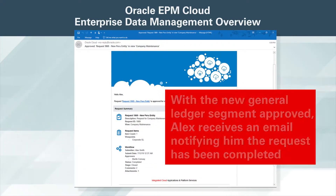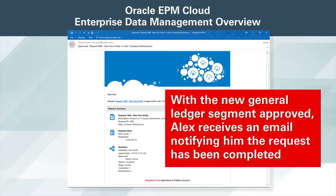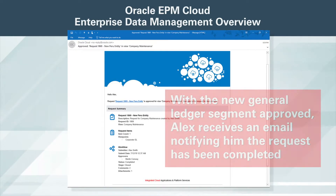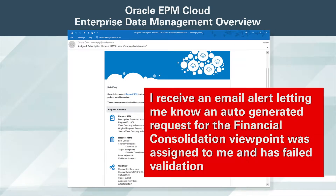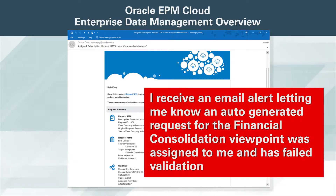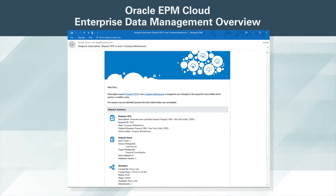With the new General Ledger segment approved, Alex receives an email notifying him the request has been completed. At the same time, I receive an email alert letting me know an auto-generated request for the financial consolidation viewpoint was assigned to me and has failed validation. Clicking on the link takes me directly to the request.